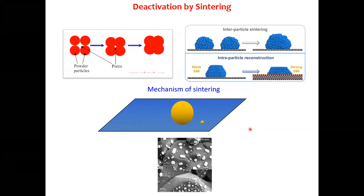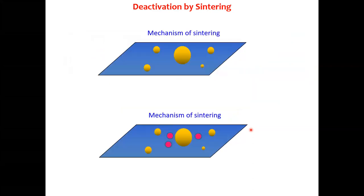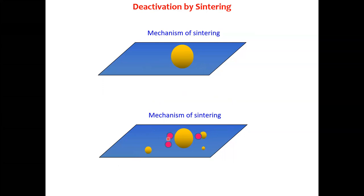The sintering mechanism shows particles moving and forming bigger particles, which changes the catalyst activity. To overcome this deactivation, you can put something in between the particles to disturb their migration. You can create that disturbance by adding inhibitors or promoters during catalyst manufacture.